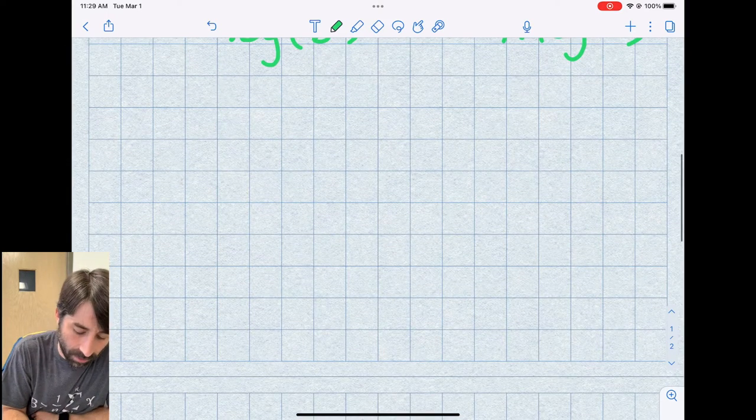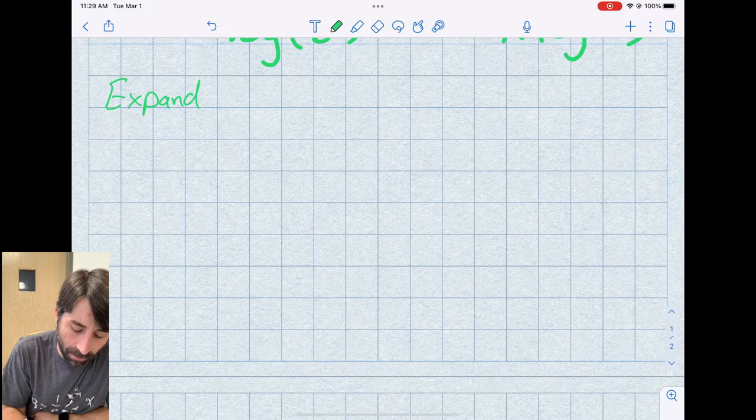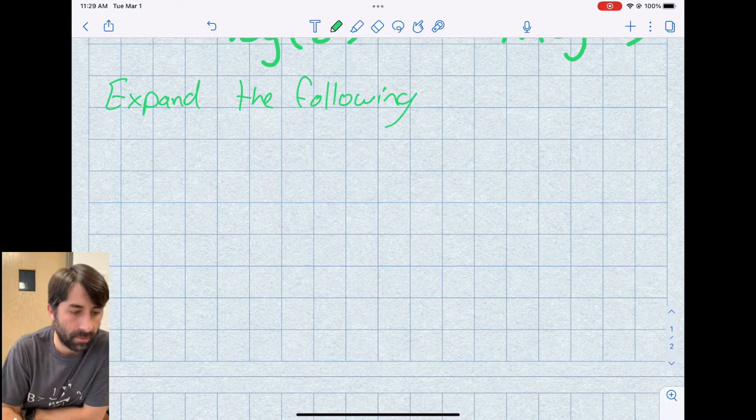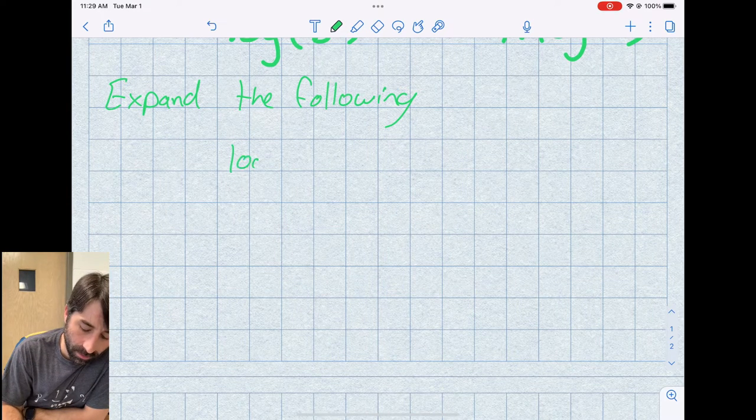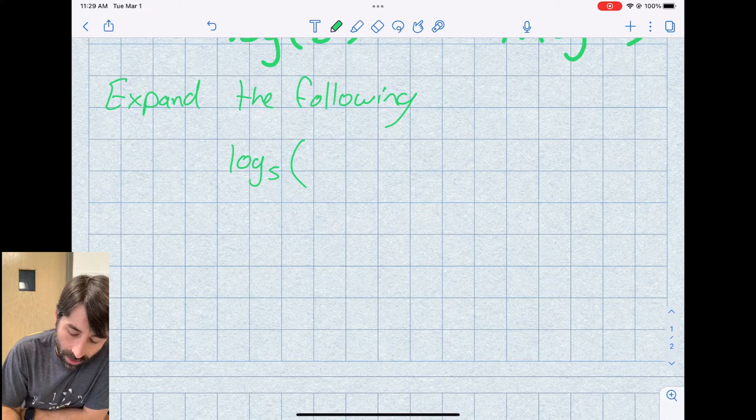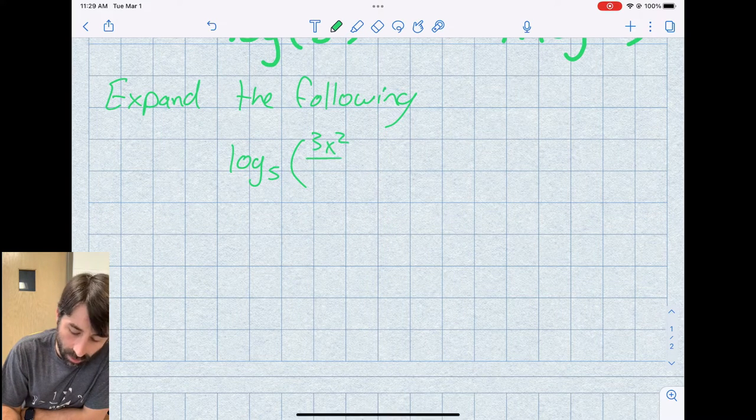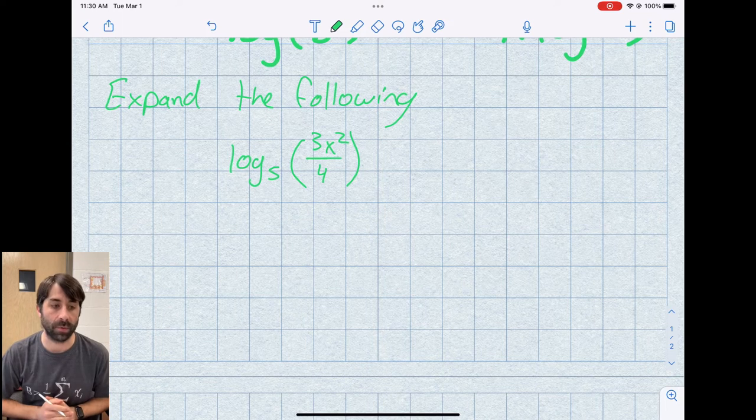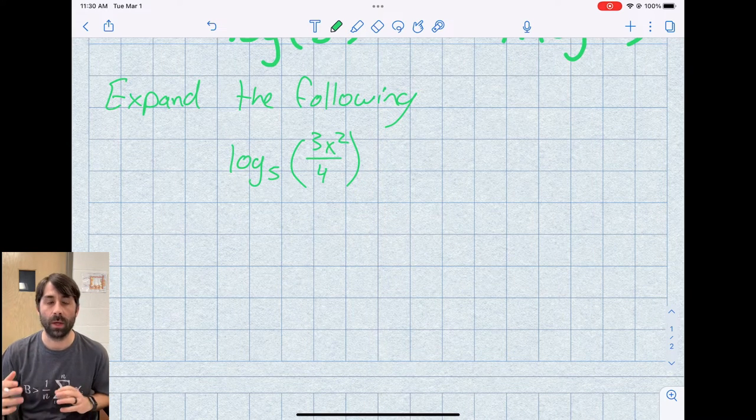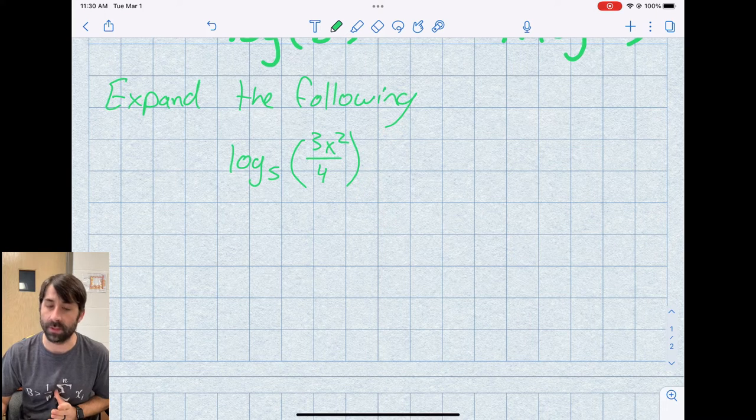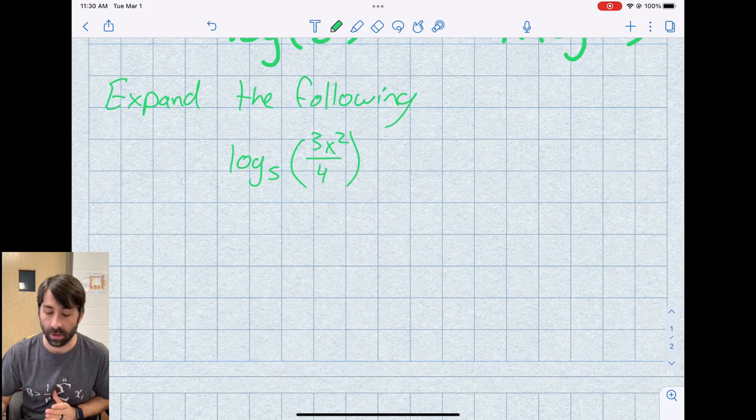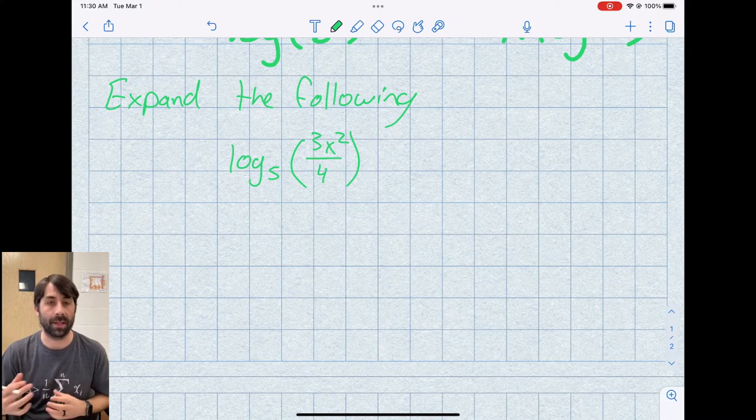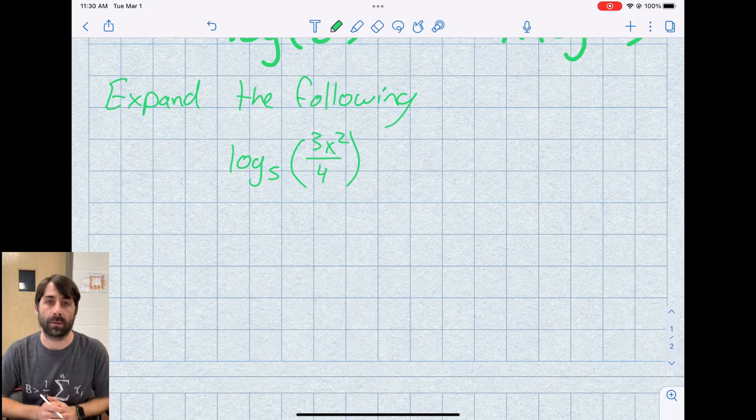So let's expand the following. What I have is log base 5 of 3x squared divided by 4. Now I want to write this as multiple logs. As of now, this is kind of a performance task, but this can actually be helpful, especially if we have like powers of the same base. So if we had, say log base 2, and I happen to have a 16 and a 32 as either factors or divisors, that allows me to just evaluate those numerically without a calculator, so it can be kind of helpful.